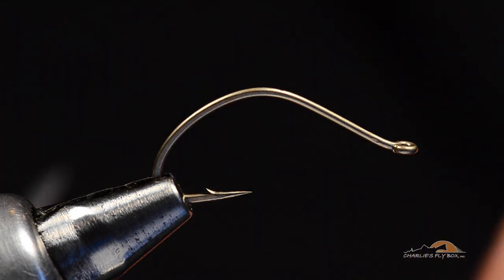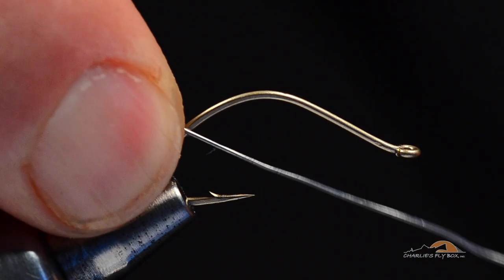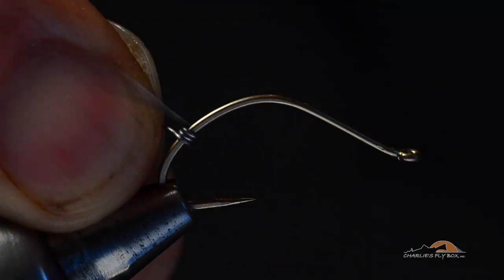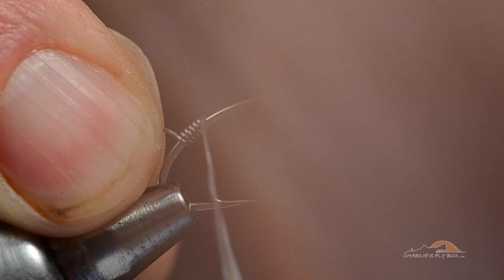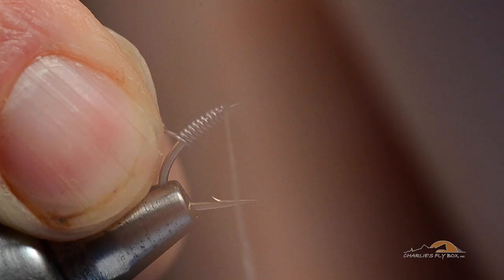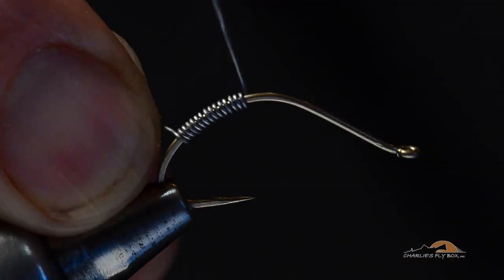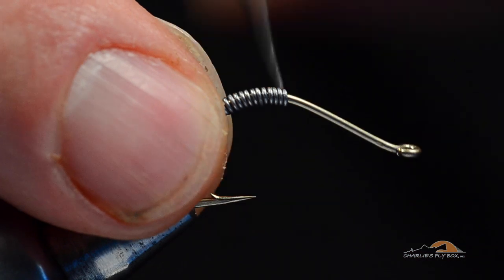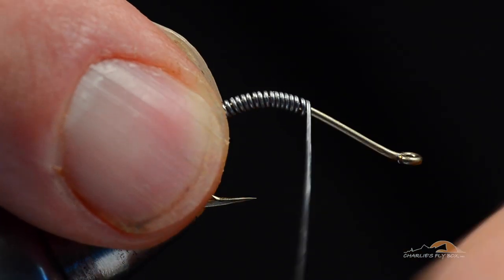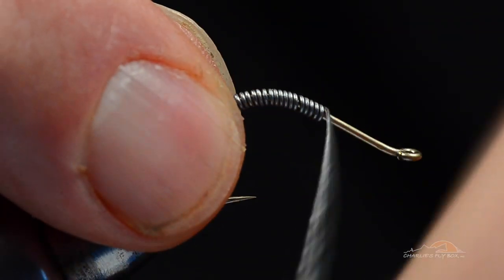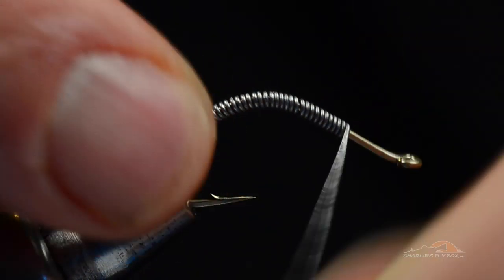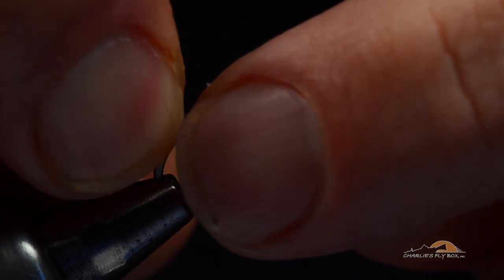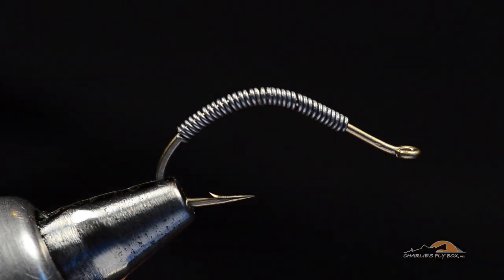I'm going to grab one end of this lead, and way down here around the bend is where I'm going to start it. And I'm going to wrap it all the way up, over the hump, and I don't really worry too much about butting those turns right close together, because I've got a chance to squeeze them back together here in a minute. So I weight them pretty heavy. And then I'll break those two ends off.